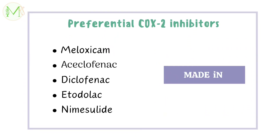Now we have preferential COX-2 inhibitors. The drugs in this class are meloxicam, aceclofenac, diclofenac, etodolac, and nimesulide. The mnemonic is 'Made In' — imagine before buying a product, you give preference to where it's made. So preferential COX-2 inhibitors use the mnemonic 'Made In.' These are better than non-selective inhibitors in that they inhibit COX-2 more preferentially, and therefore have less gastric side effects — since COX-1, which is concerned with gastroprotection, is less affected.